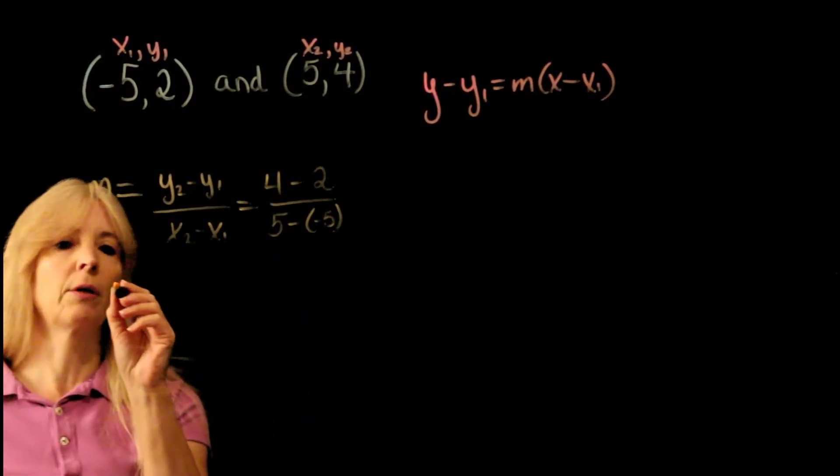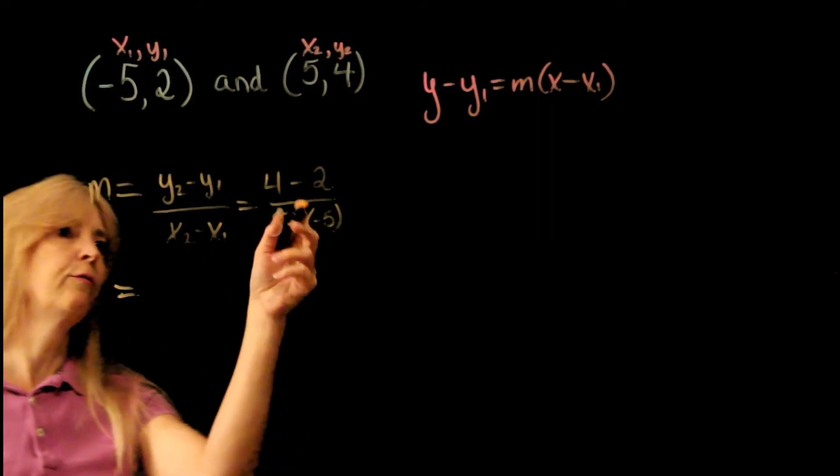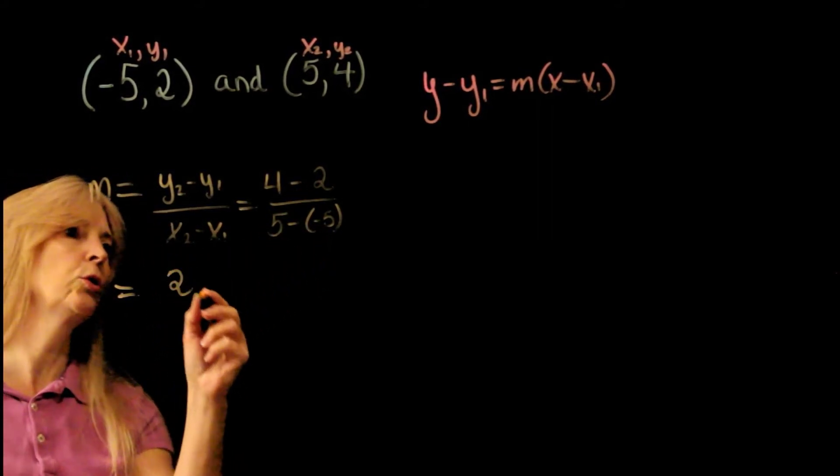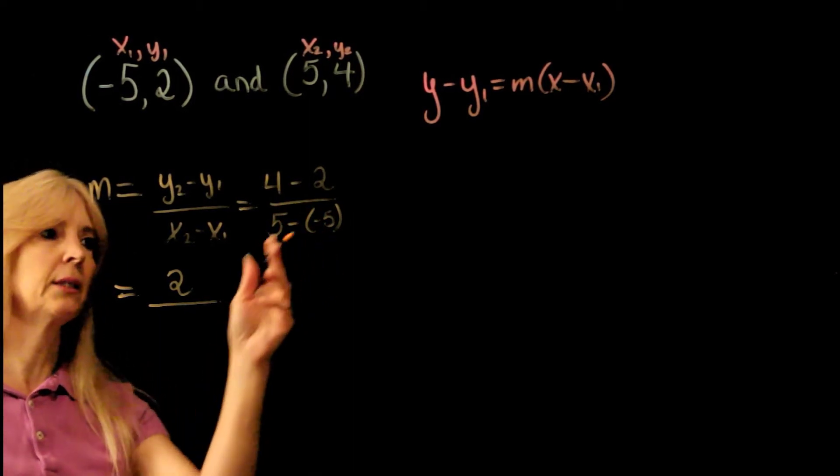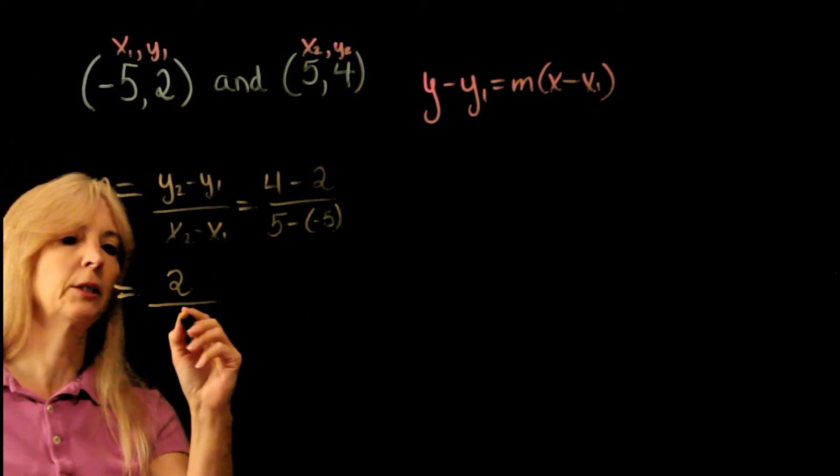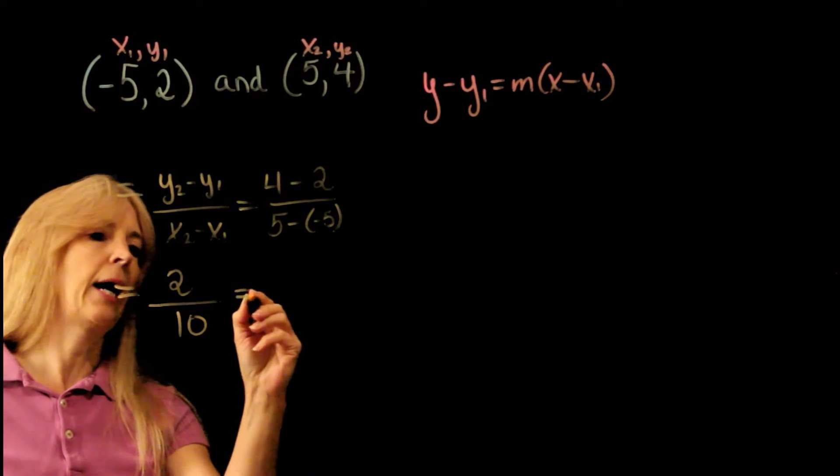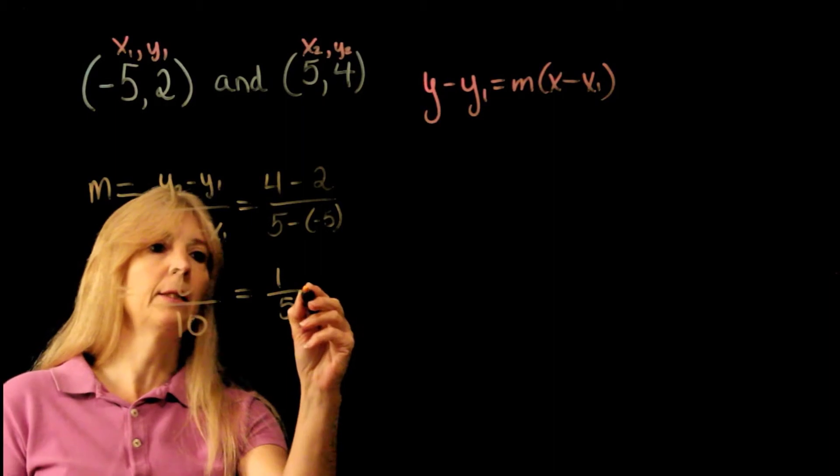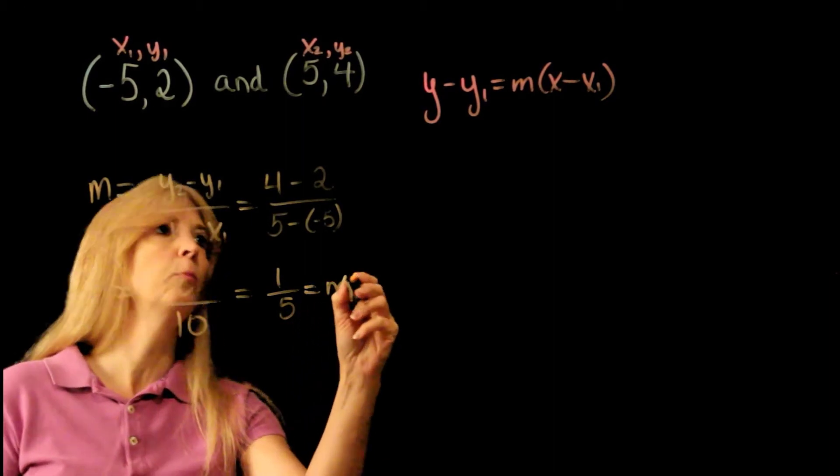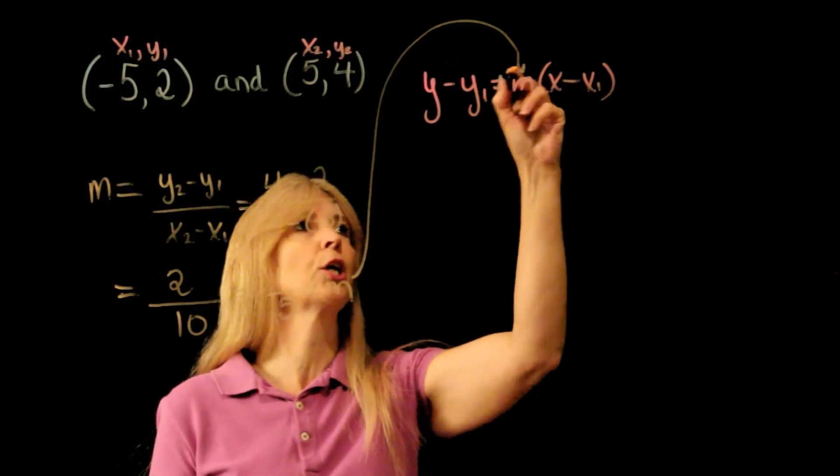So 4 minus 2 is 2, and 5 minus negative 5 is 5 plus 5, which is 10. So I have 2 over 10, and I can reduce my fraction to 1 fifth. This is the slope, which will get plugged in right here.